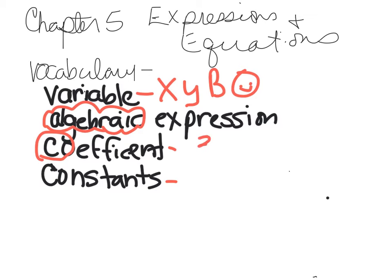And so we could say like 3x. Now, the coefficient is the number. It's always a number and a number only that's stuck on to the variable. So the coefficient here in this expression would be 3 and the variable would be x.